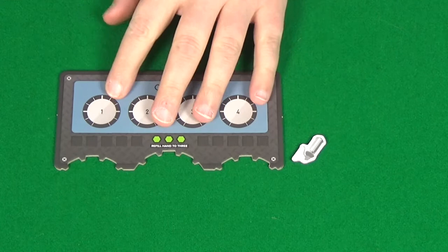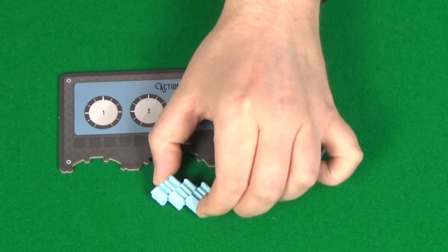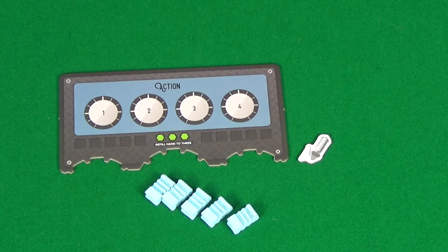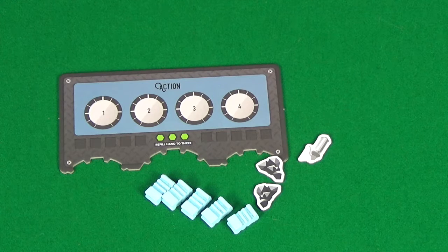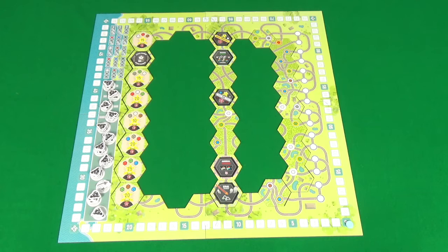They'll also take the scoring marker, which is placed on the zero space of the score track running around the outside of the board. Three trains of their color for a five player game, four trains for a four player game. And if you're playing with two or three players, then five trains. Then your first and second players will receive two coal tokens each. If you have a third or a fourth player, they'll each receive an extra token for a total of three coal tokens. And if you have a fifth player, they'll get four coal tokens.